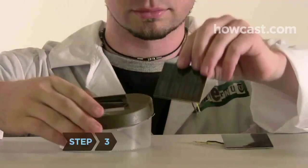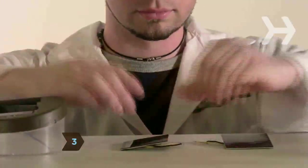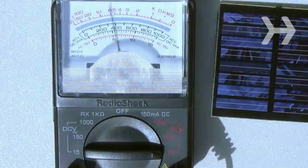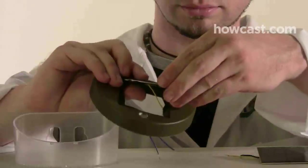Step 3. If one solar panel does not provide enough volts to charge your device, add another. Solder its positive wire to the negative wire of the first solar panel. Test the voltage again. If it's still not enough, add a third panel.